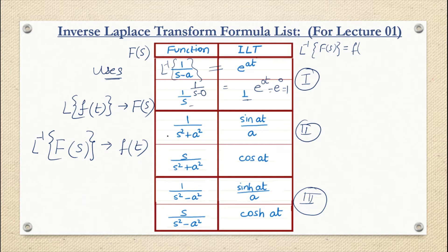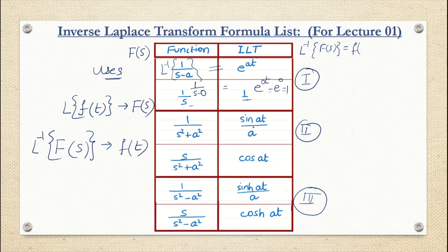Set two covers the forms 1/(s² + a²) and s/(s² + a²). The inverse Laplace transform of 1/(s² + a²) is sin(at)/a — don't forget the division by a. The inverse Laplace transform of s/(s² + a²) is cos(at). These formulas correspond to the reverse of the standard Laplace transforms of sine and cosine.